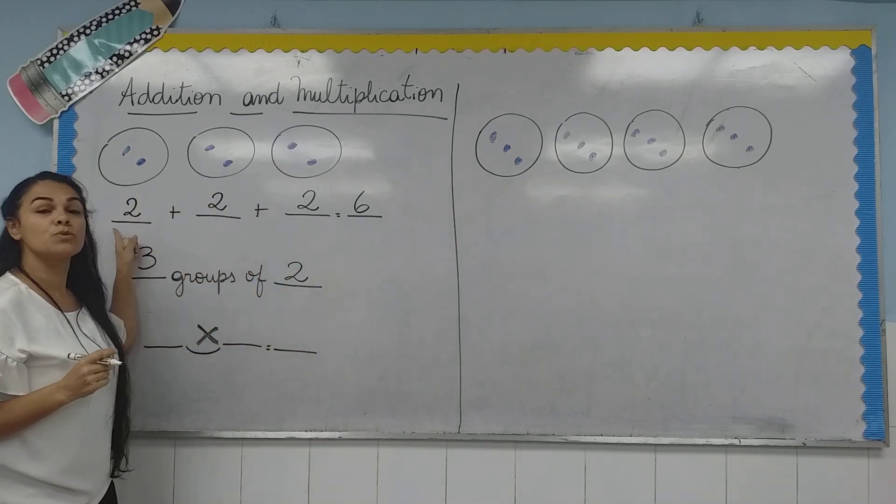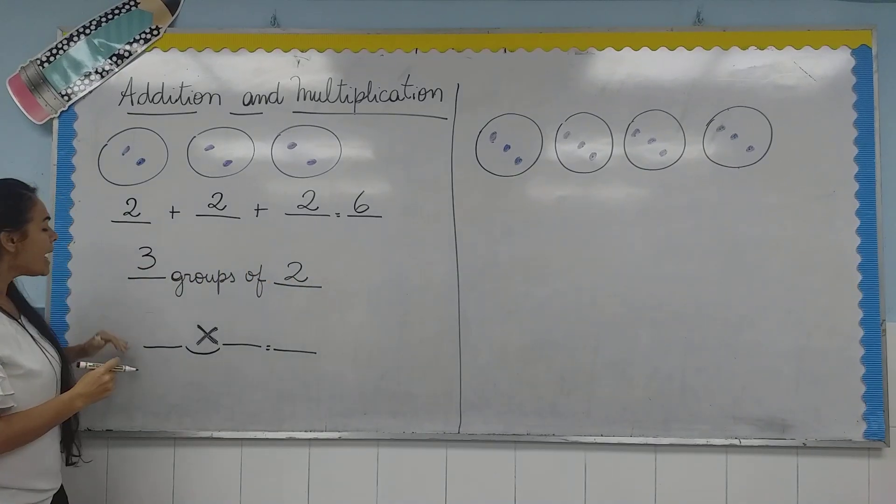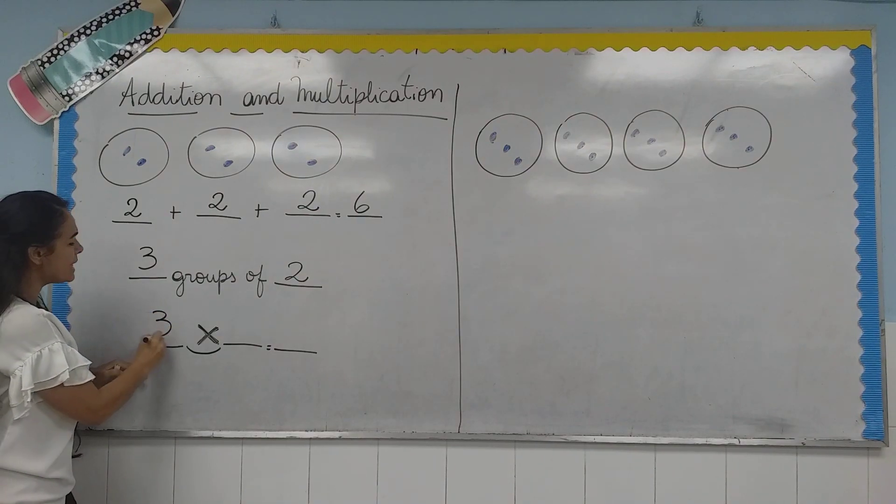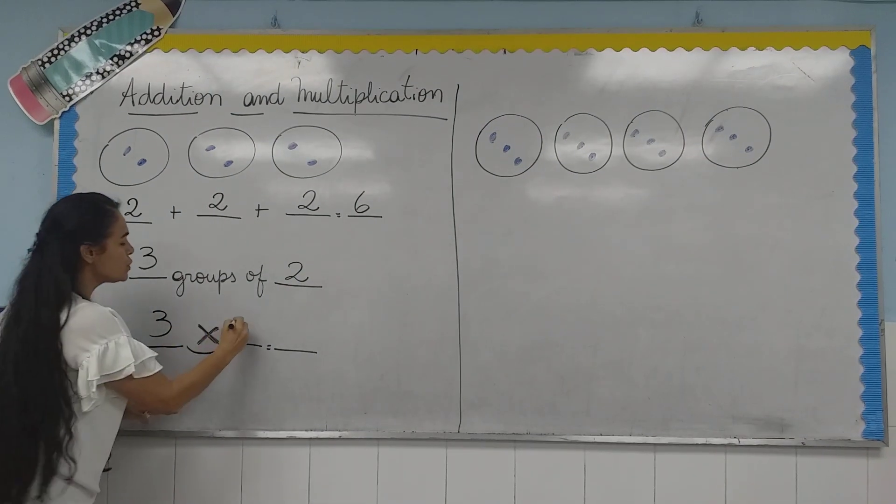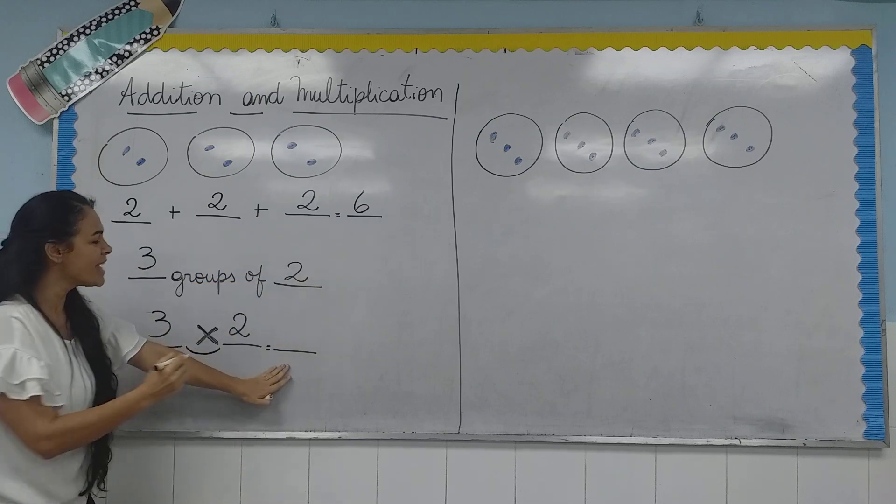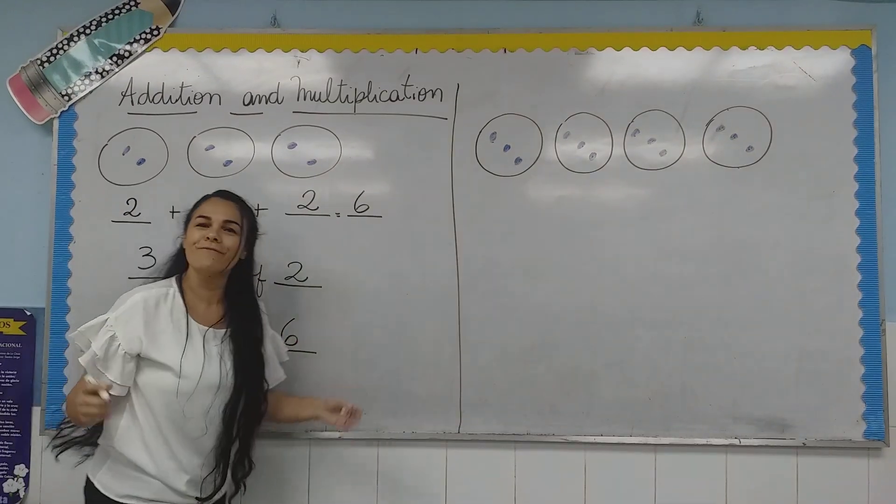In this case, we are repeating number two. So, we are going to have three times two. And what is the answer? Six. Very good.